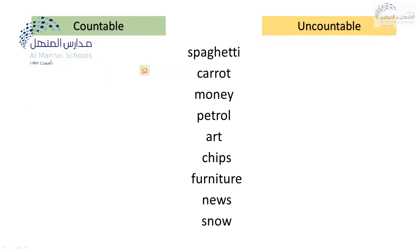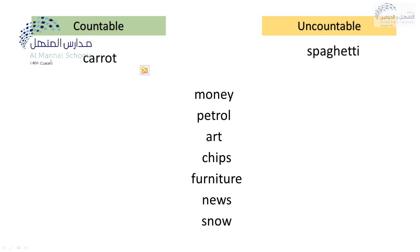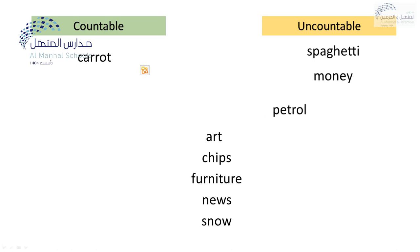This is a short quiz, because we have to answer together to differentiate between countable and uncountable nouns. Spaghetti — countable or uncountable? Spaghetti is uncountable. What about carrot? We can count carrots, so it is a countable noun. We can say a carrot, two carrots and so on. What about money? Money — uncountable noun. We cannot count money as a whole. What about petrol? Petrol is liquid, so uncountable noun.